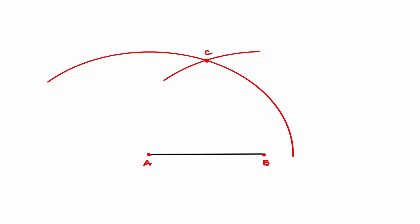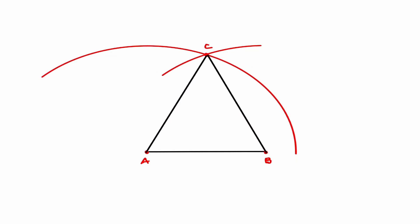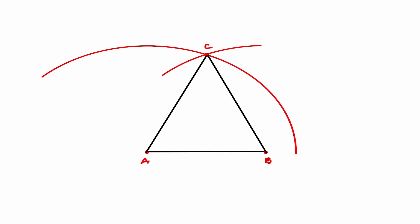Now if I connect those three points—if I connect A to C and B to C—we have created an isosceles triangle.